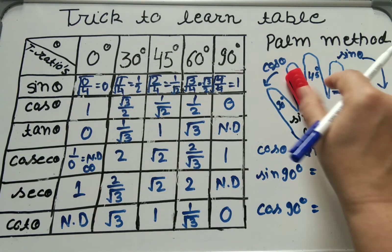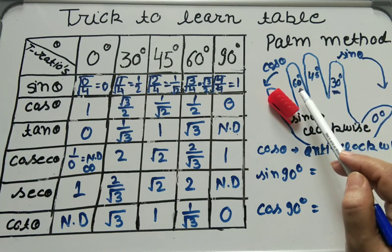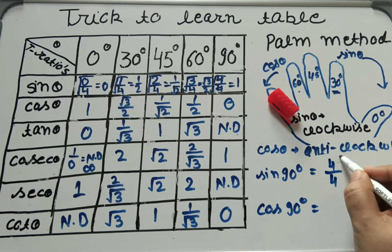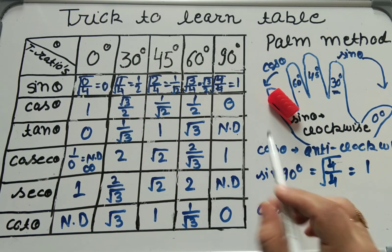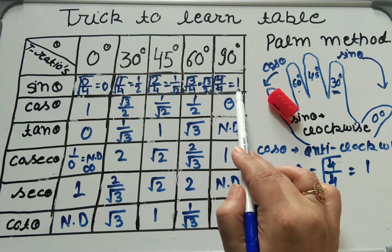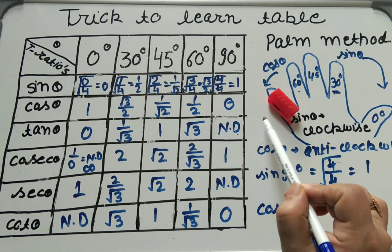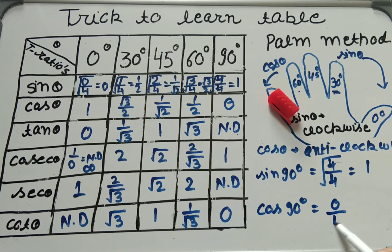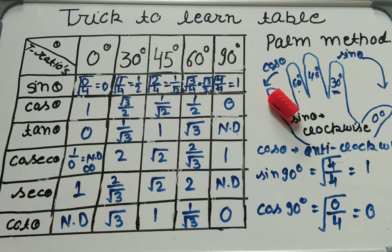For sin 90°: hide 90 degree, count clockwise — 1, 2, 3, 4 fingers. Numerator 4, denominator 4, apply square root: 4 cancels 4, answer is 1. For cos 90°: anticlockwise, no fingers left after 90 degree — so numerator is 0, denominator 4, square root: answer is 0. Both match the table.